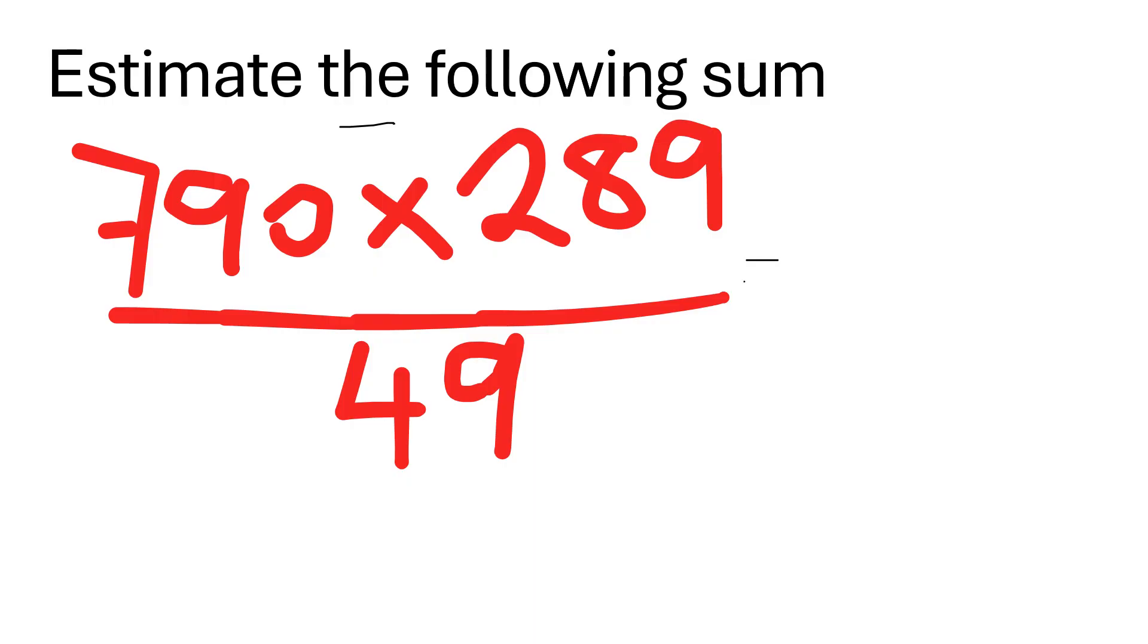The key with estimation in general is we round each number to one significant figure. So the first non-zero number and then followed by zeros.